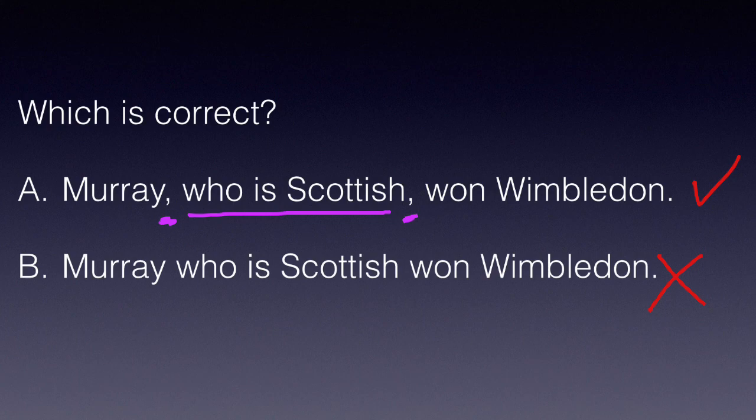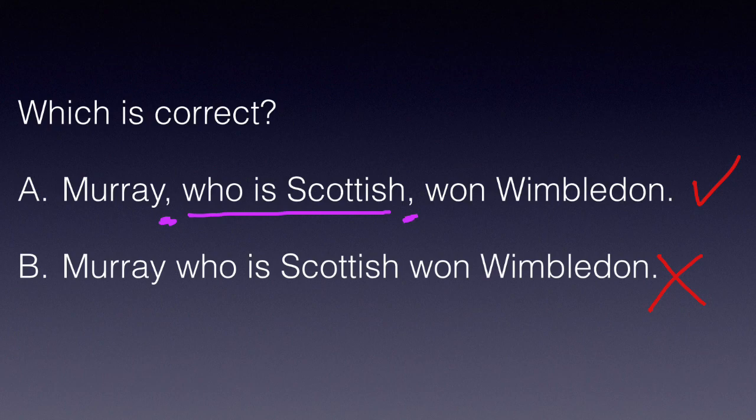In B, without any commas, it's defining. So here we would, for instance, be talking about two people called Murray. We might say 'the Murray who is Scottish won Wimbledon,' whereas 'the Murray who is English didn't.'